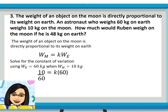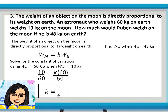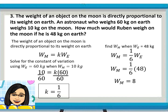Dividing both sides by 60, our constant of variation is 1/6. Now let us find the weight on the Moon if Ruben weighs 48 kilograms on Earth. Using the variation equation W sub M equals 1/6 times W sub E, substitute 48 for W sub E. So, the weight is 8. Ruben weighs 8 kilograms on the Moon.